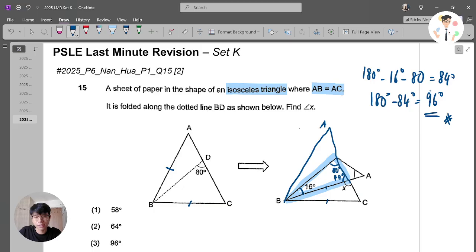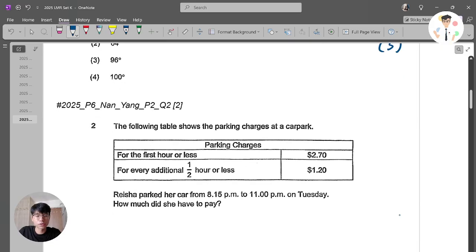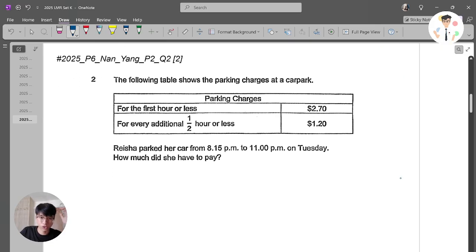And that will give me 96. So X is actually 96. And of course, if you are smart enough, you should notice that this plus this should give you X. So that will be answer option number three. Let's move on to the next question from Nanyang Paper 2, Question 2.